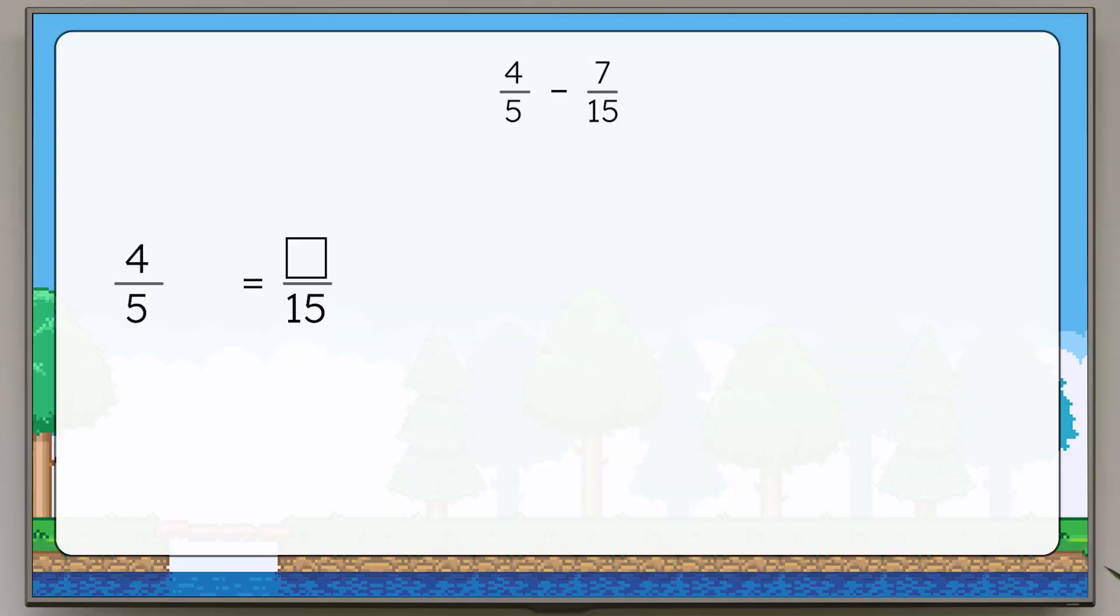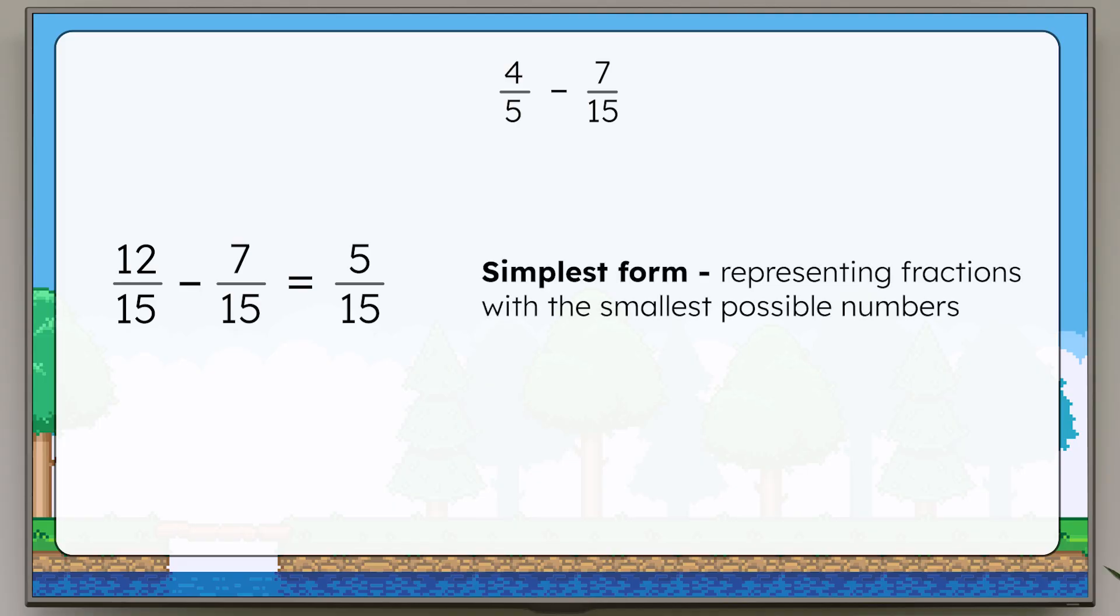Since five times three equals fifteen, we can multiply the numerator by three so that the fractions are equivalent. Four times three equals twelve, so four-fifths is equivalent to twelve-fifteenths. Twelve-fifteenths minus seven-fifteenths equals five-fifteenths. In our last lesson, we practiced recording answers in simplest form. Can five-fifteenths be simplified?